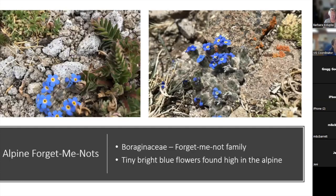We've got the alpine forget-me-not — really cute little flowers in the forget-me-not family, bright blue, found high in the alpine really close to the ground. You can spot them from a little further distance because their blue stands out so much. They're very similar looking to other forget-me-not species, but these ones grow in a cushion just like the phlox, whereas lower-elevation ones will be on a longer stem.